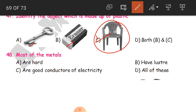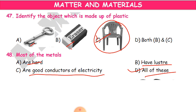Question 48: Most of the metals — how are they? Are they hard? Are good conductors of electricity? Have luster? Or all of these? The answer is all of these: metals are very hard, they are good conductors of electricity, and they have luster.